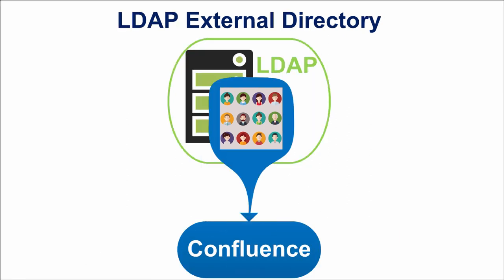The second variant is to use an LDAP external directory. Lightweight Directory Access Protocol is a software protocol for enabling anyone to locate organizations, individuals, and other resources such as files and devices in a network — which may be public internet or corporate. LDAP has been endorsed by at least 40 software companies; for example, Microsoft includes it as part of Active Directory in a number of its products.